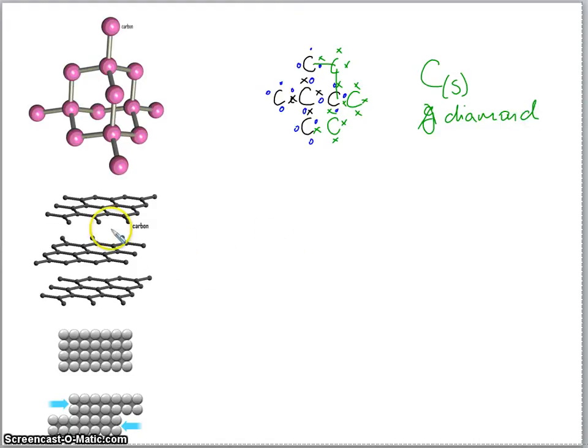The bonding in graphite is slightly more complicated and not something you need to know about for your GCSE. Suffice it to say that we've got these three covalent bonds here. If we think about carbon again, it's got its four electrons. If three of these are involved in bonding to three other carbons, then this electron here is not involved in a covalent bond. It's a special kind of electron we call it a delocalized electron.